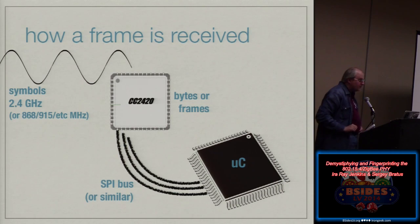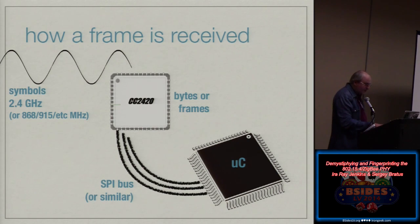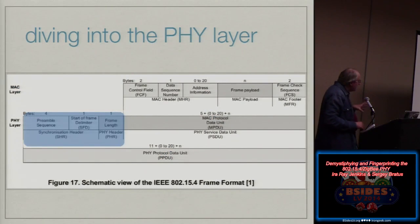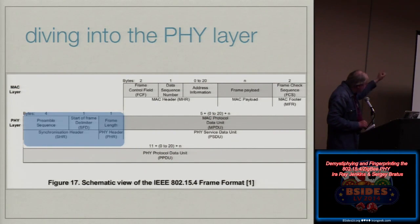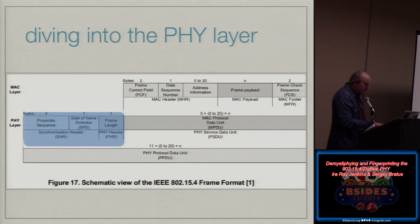You send the frame you want in a buffer. That buffer goes to the microcontroller, over the SPI bus it goes to the chip, then you give the chip the command to transmit and it transmits that buffer as waveforms. We're not going to look at layer 2. We're going to look at the highlighted layer 1: the preamble, the start of frame delimiter, and the length. This is the part that Wireshark just doesn't show you, because the chips don't give it to you — they consider it for their own consumption.